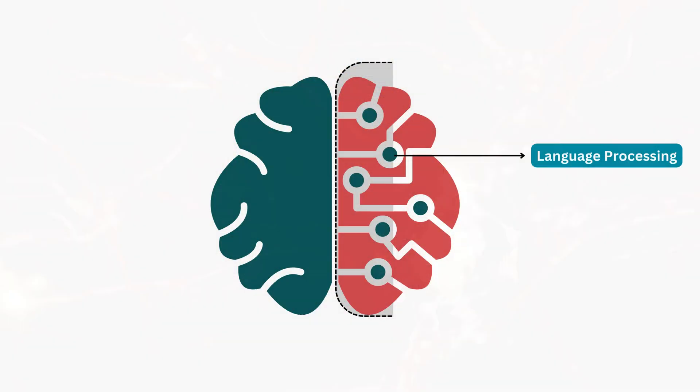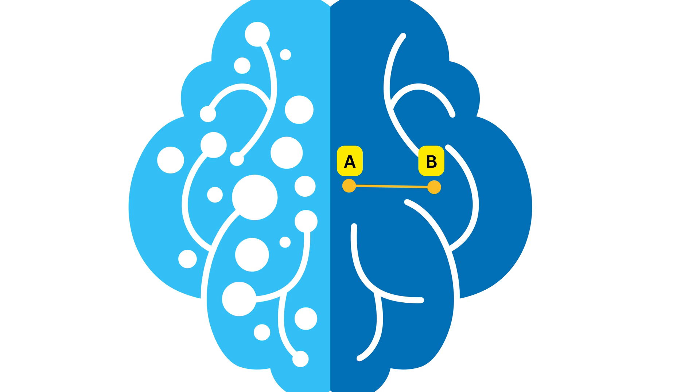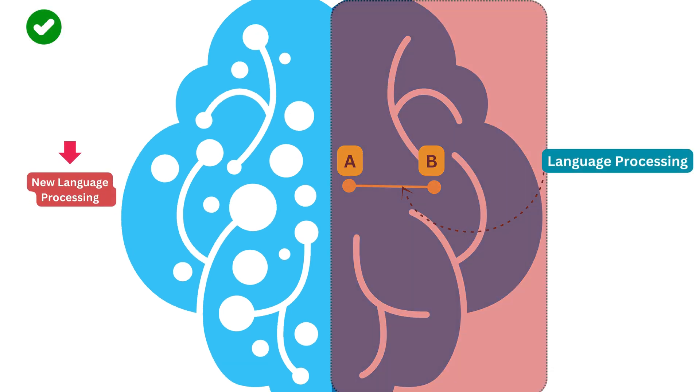For example, if the removed hemisphere was responsible for language processing, the remaining hemisphere might start to take on some of those language functions by rewiring its neural circuits. Imagine if the left hemisphere, which typically handles language processing, is removed. In this scenario, the right hemisphere might start to develop new neural pathways to take on some of the language functions. So, instead of the usual path from point A, the left hemisphere, to point B, language processing, the brain reroutes signals from point A to a different destination, perhaps activating areas in the right hemisphere associated with visual and spatial processing. This rerouting allows the brain to adapt and continue performing essential functions, albeit in a different way.